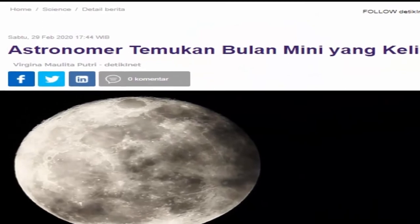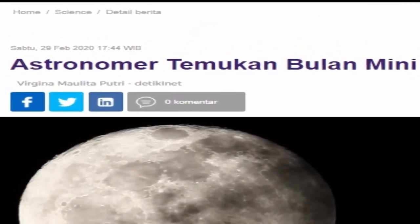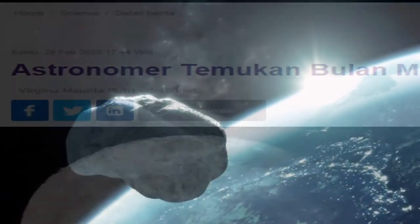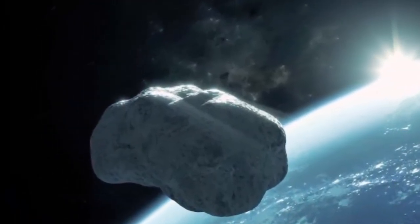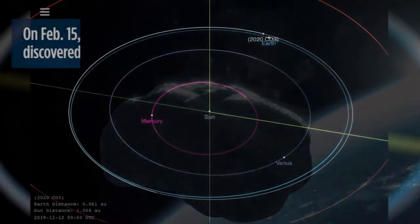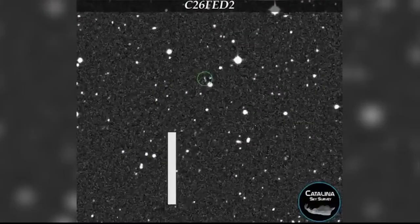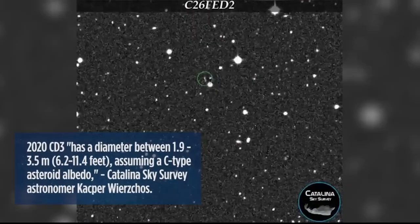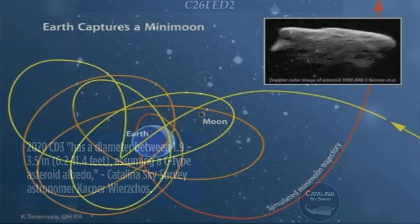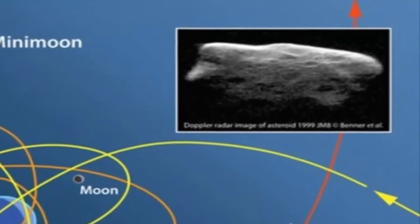Selama ini mungkin kita hanya kenal satu bulan sebagai satelit alami yang mengelilingi bumi, but astronomers found a mini moon, also known as an object caught in Earth's orbit. A mini moon is an asteroid caught in orbit for several months before coming back to the solar system or burning in the atmosphere.